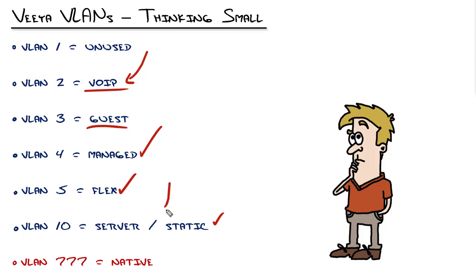Just so you know, this is an invalid name. VLAN 10 should be server and then I would put a dash static, no spaces. But what I want you to catch here is the VLAN numbering that is used.